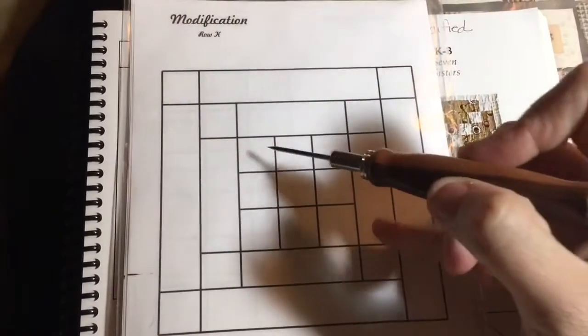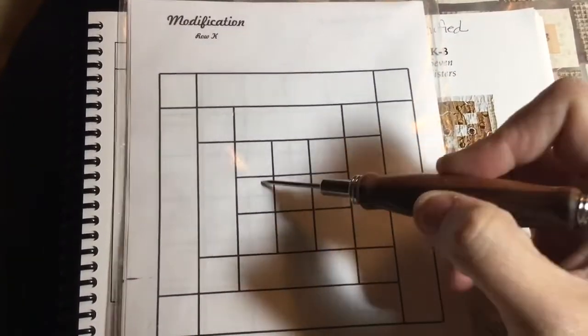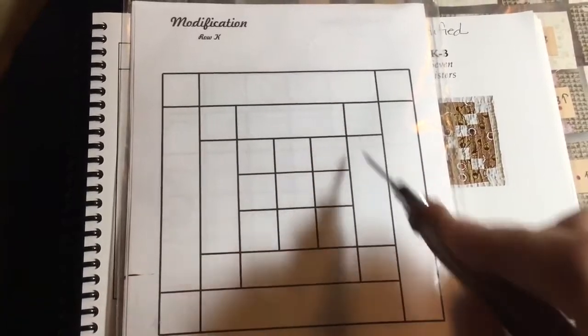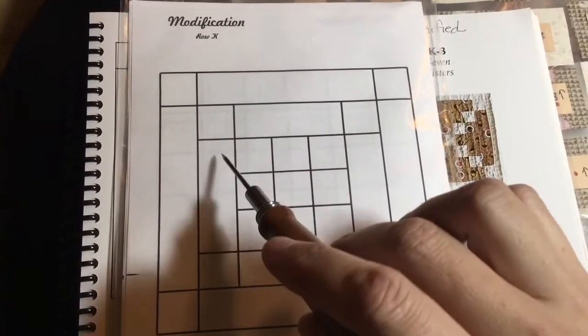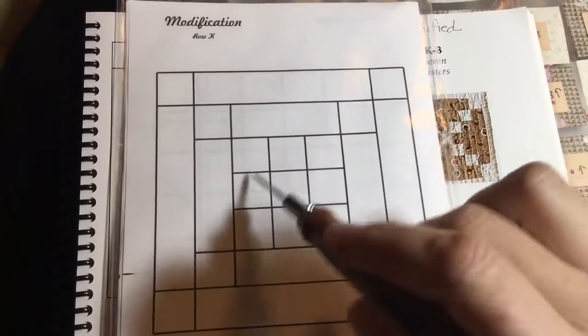So what we have here is a nine patch block and then cornerstone border. So you've got a rectangle. What I'm going to end up doing is attaching these rectangles on each side of the nine patch,